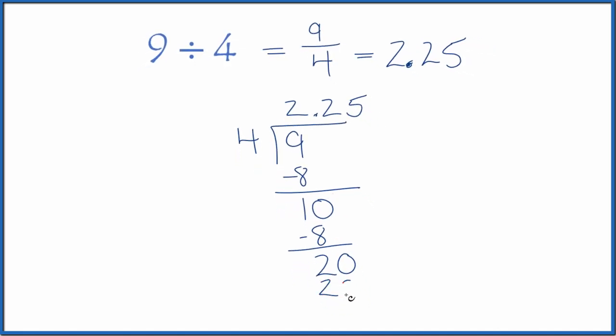5 times 4 is 20. Subtract, no remainder. So 9 divided by 4 equals 2.25. That's what we found up here.